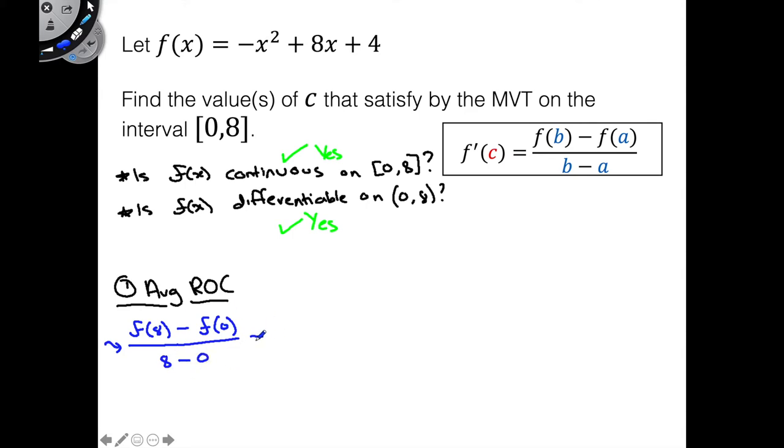If we do this out, we'll get f of 8 is simply going to be 64 times a negative 1, plus, once again, we'll have a 64 here. So the negative 64 and the positive 64 cancel out, so we're just left with a plus 4. Minus, plug in 0, if we plug in 0, the x squared and the 8x both go to 0. We're just left with a positive 4 once again. Divide all that by 8, and what we're going to get is, since 4 minus 4, we're just going to get 0.